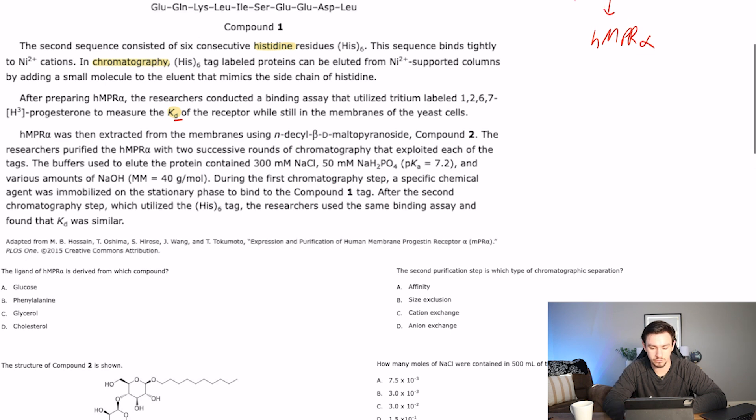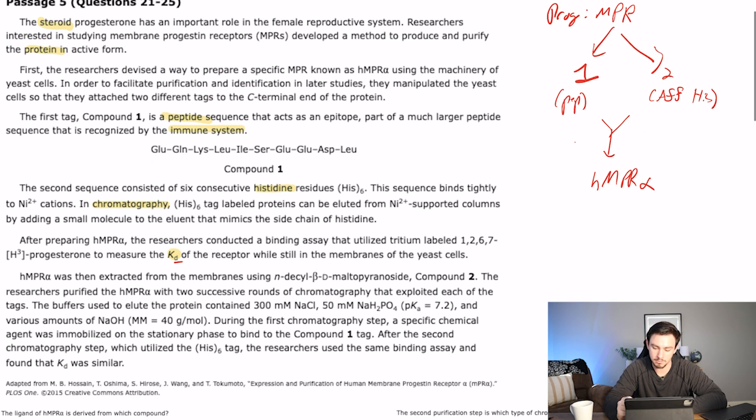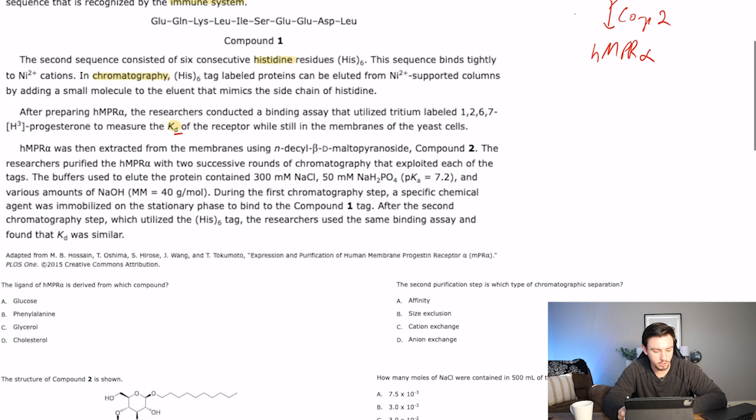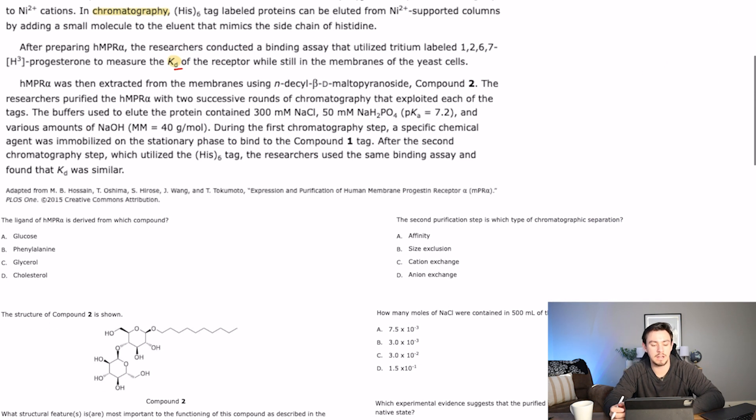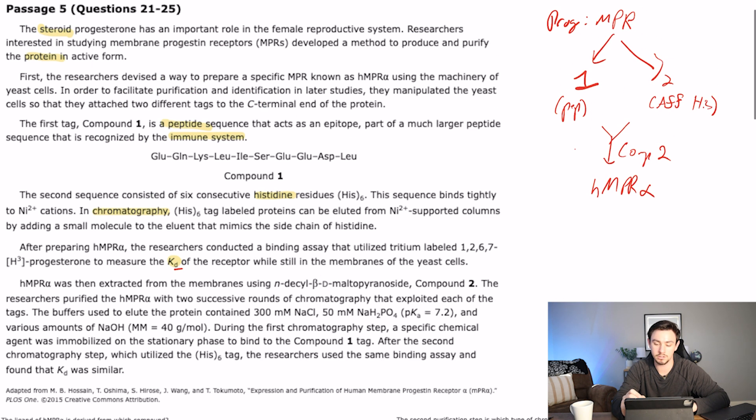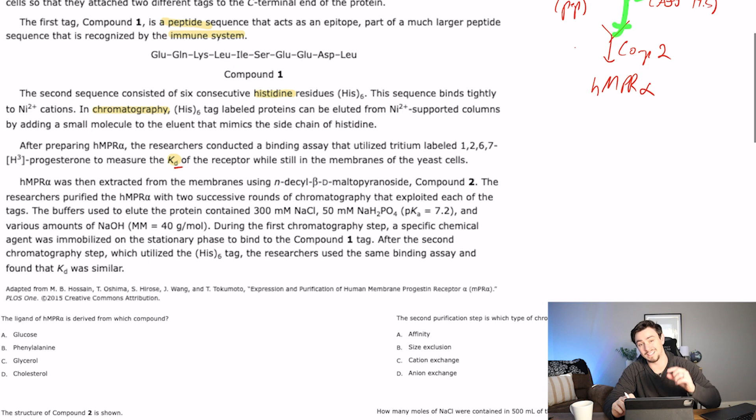So HMPR alpha was then extracted from the membranes using this molecule, compound 2. The researchers purified this HMPR alpha with two successive rounds of chromatography that exploited each of the tags. So meaning they took what they thought was HMPR and they ran it through both of these processes again to make sure, like, hey, what we've got is actually HMPR alpha.